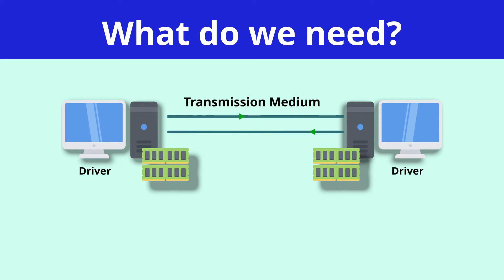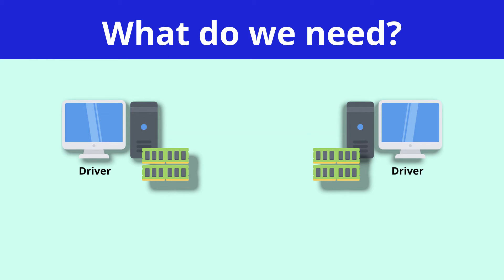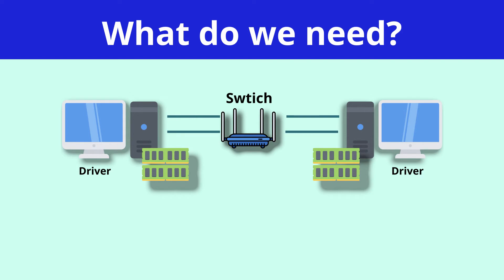In between each of these two devices, we will have something called a transmission medium. This is the material or the way that the computers are going to communicate — different types, for instance, wired, wireless, or radio. The transmission medium doesn't connect directly between two devices; it will connect between another device called a switch. A switch is the piece of hardware that puts all of the devices on a single network.